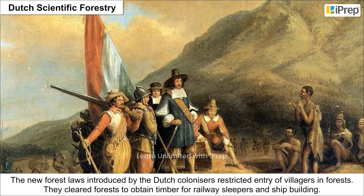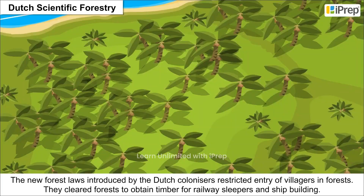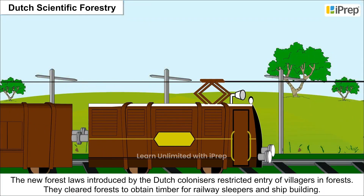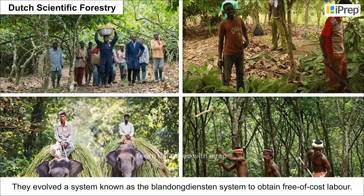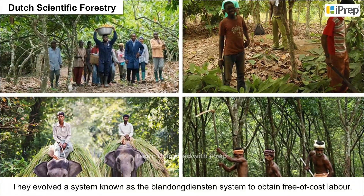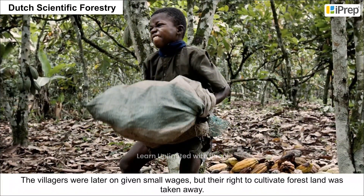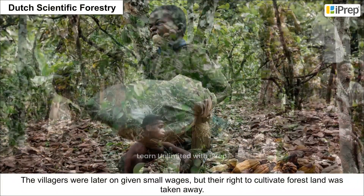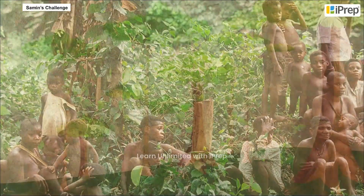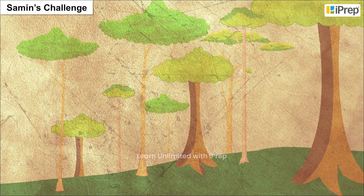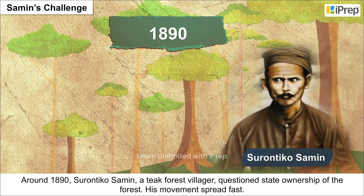Dutch scientific forestry: the new forest laws introduced by the Dutch colonizers restricted entry of villagers into forests. They cleared forests to obtain timber for railway sleepers and ship building. They evolved a system known as the Blandong Dynstein system to obtain free-of-cost labor. The villagers were later given smaller wages, but their right to cultivate forest land was taken away.